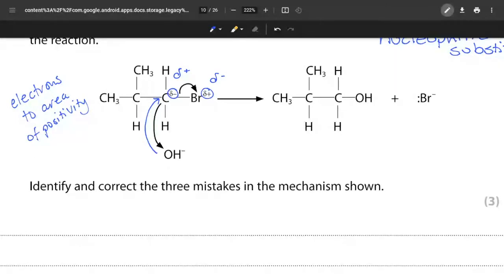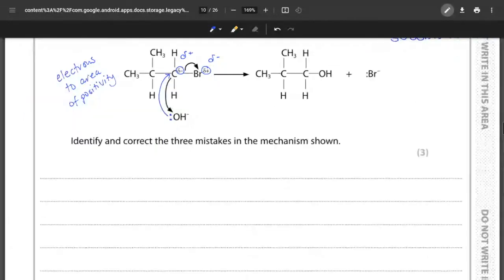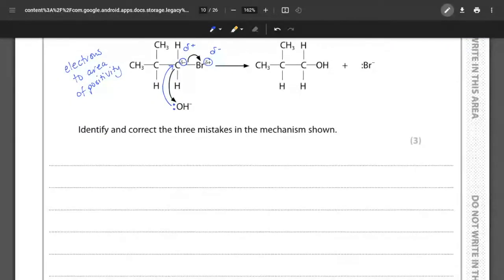You must show dipoles, you must show curly arrows, and you must also show lone pairs because that shows the actual movement of the electrons. So we must show the lone pair on the OH. Those are our three errors so we want to make sure that we put that into the form of words.